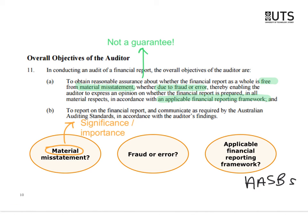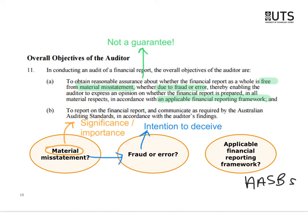Misstatements could be due to two reasons: fraud, which is usually characterized by some intention to deceive, or error, which is simply making a mistake. I'm looking for intentional deception — remember the Kingston Cotton Mill case, I'm the watchdog, not the bloodhound — and I'm also looking for mistakes. Less than 5% of auditors in practice have ever found fraud, so it's pretty hard to find, but most people can find mistakes. Don't be surprised if in your first year you don't find a fraud.